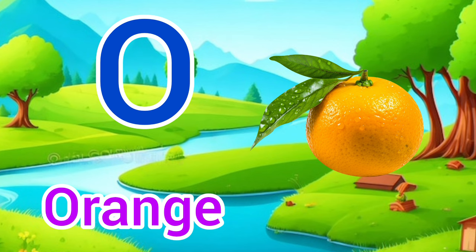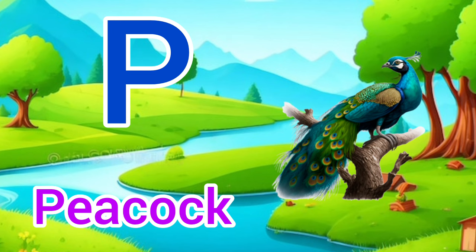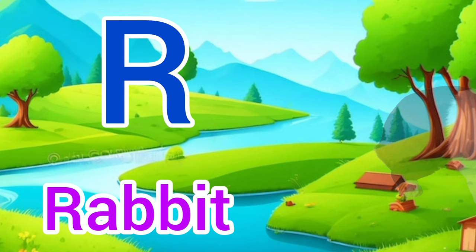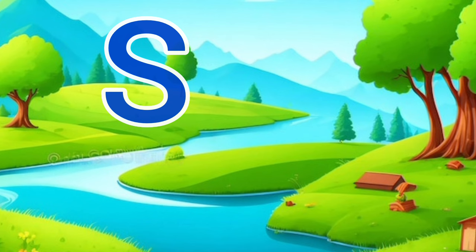P for peacock, peacock means more. Q for queen, queen means rani. R for rabbit, rabbit means kargos. S for spoon, spoon means chamach.